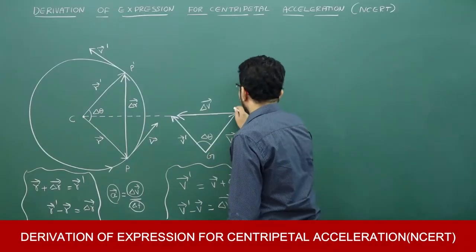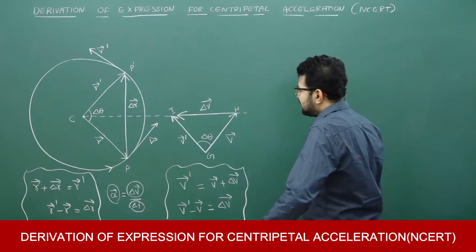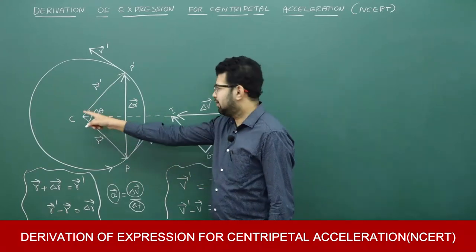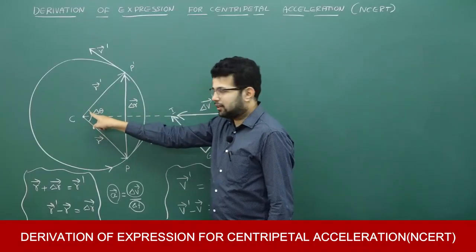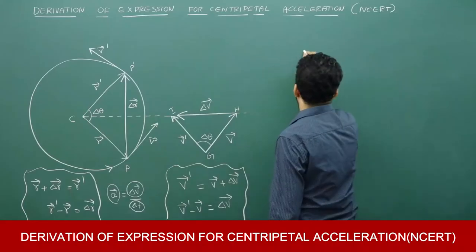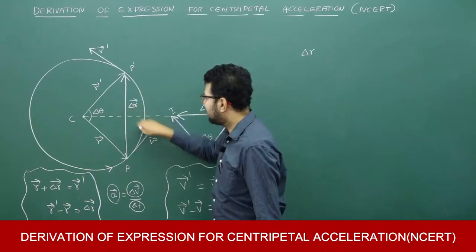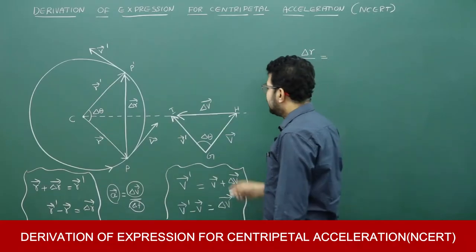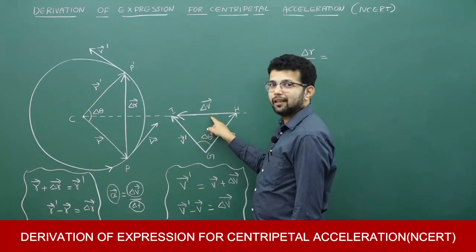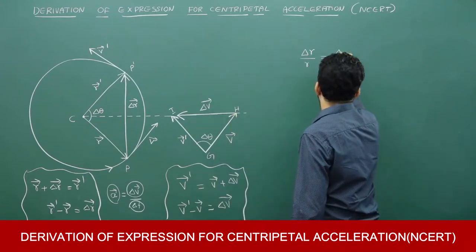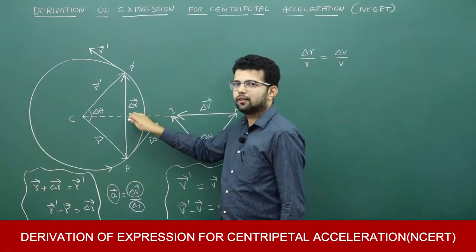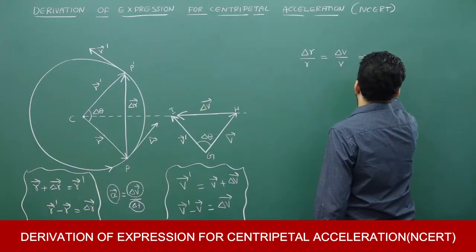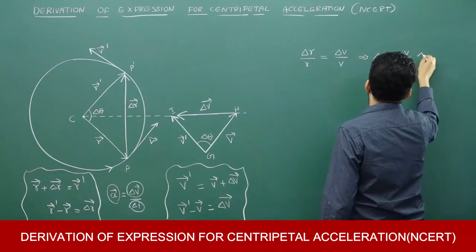I will name this triangle G-H-I. In the case of similar triangles, we can compare the ratios of sides. In triangle C-P-P', the side opposite to delta theta is delta r, so delta r by r. In the velocity triangle, the side opposite to delta theta is delta v, so delta v by v. Therefore delta r / r = delta v / v, which gives delta v = (v / r) × delta r.